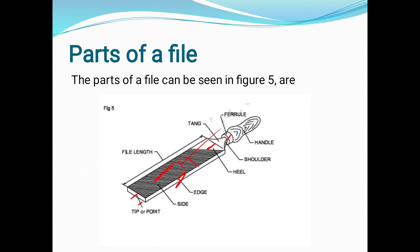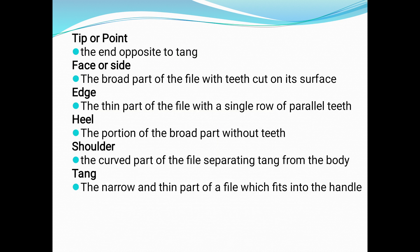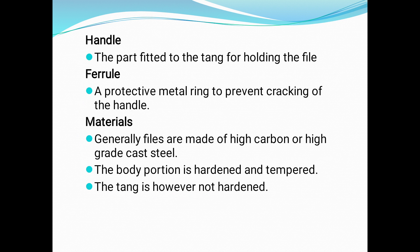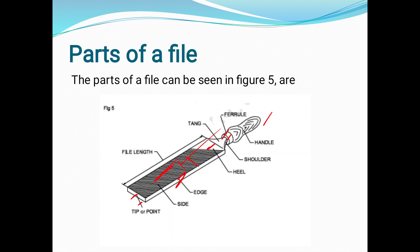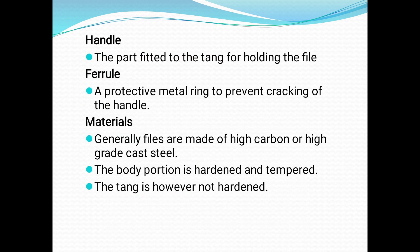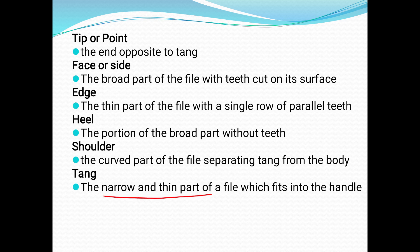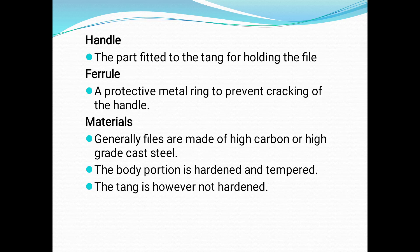The tang is the narrow thin part of the file that fits into the handle. The handle is the part fitted to the tang. The ferrule is a protective metal ring that prevents the cracking of the handle.